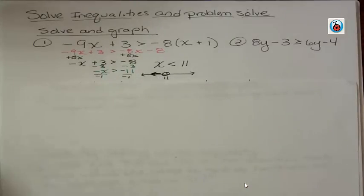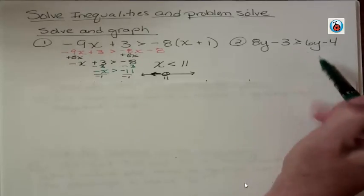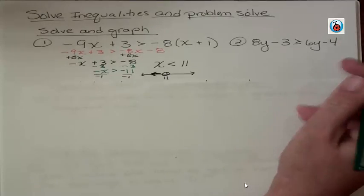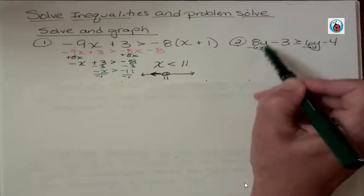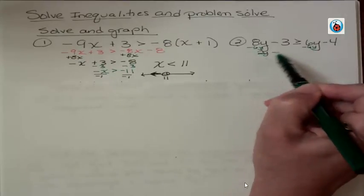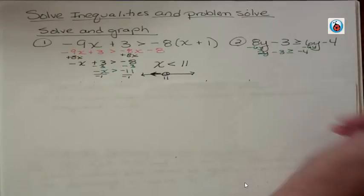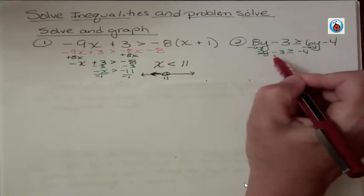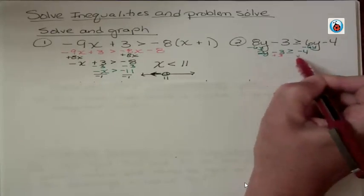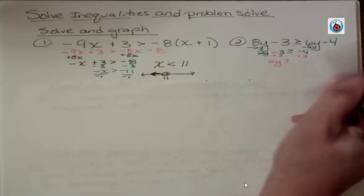What about this one? Well over here we don't have to worry about anything except just moving that variable and the constant terms. So I'm going to subtract 6y. 8y minus 6y is 2y. These go away because they're opposites. And now I'm going to have an additive inverse for 3. So I have 2y is greater than or equal to negative 1.